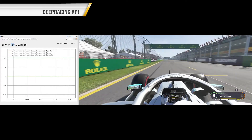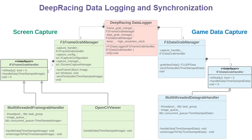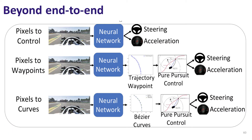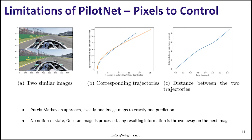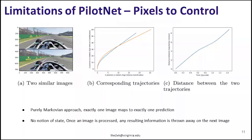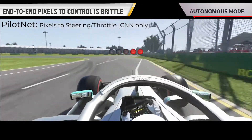The API can also send steering and acceleration back to the game to autonomously control the race car. We then implement and compare different autonomous racing algorithms, starting with pixels to control — an end-to-end approach which directly predicts steering and acceleration commands from each image.